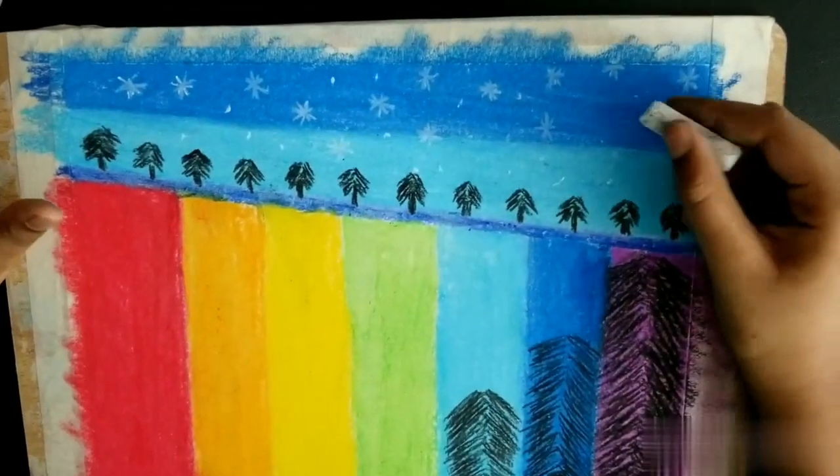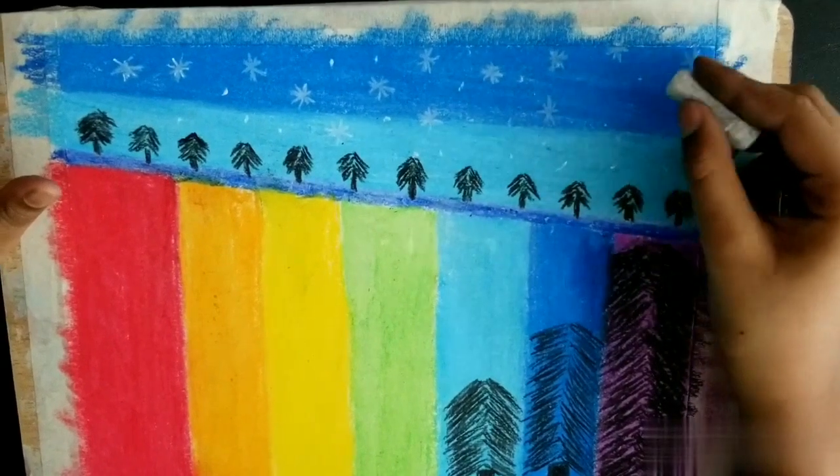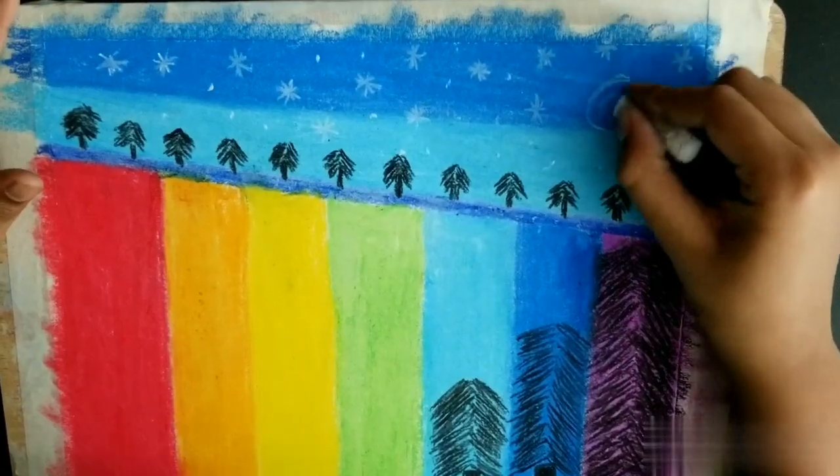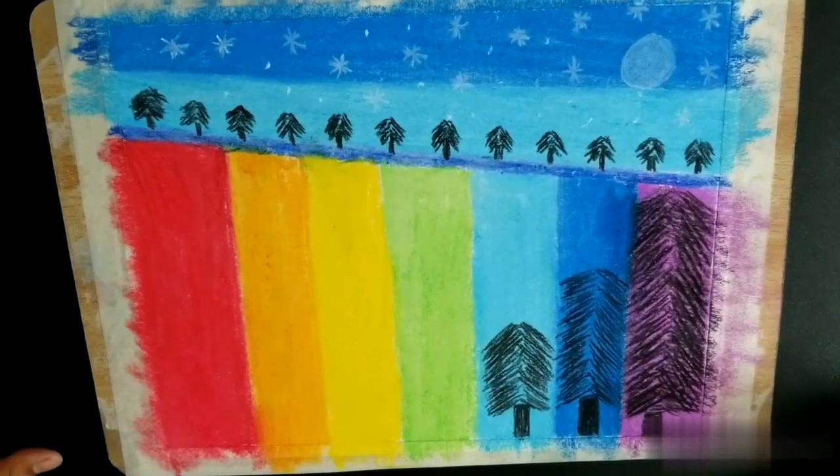Now we're going to do the moon. We just need to draw a circle and color it in. Circle, color it in. So I finished the moon.